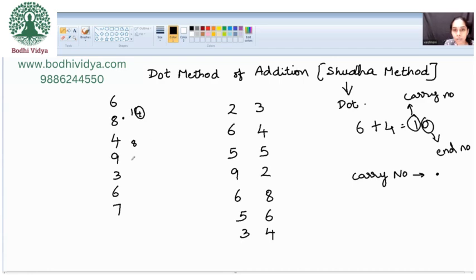8 plus 9 is how much? 17. So 1 carry number will be represented by a dot. And this 7, I need to add it with 3. 7 plus 3 is 10. Again, it is 10. A carry number is represented by a dot here.